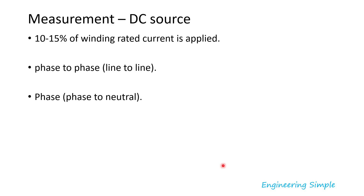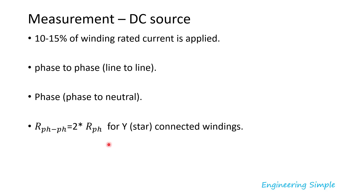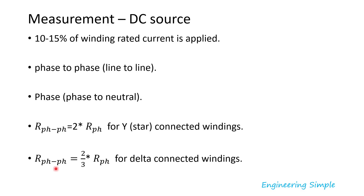You can also measure per-phase or phase-to-neutral resistance if it's a Y-connected winding — called a star connection in Europe. As shown in previous videos, for a Y or star connected winding the phase-to-phase resistance equals two times the per-phase resistance. For a delta connected winding, the phase-to-phase resistance is two-thirds of the per-phase resistance.